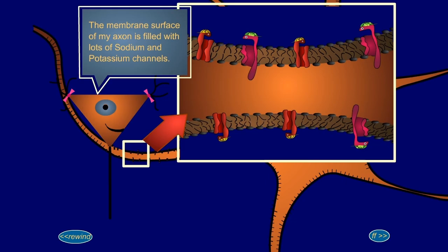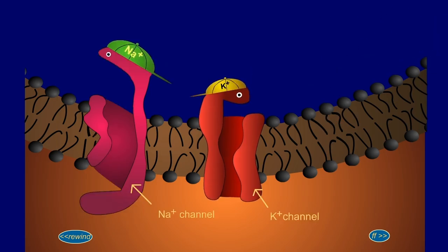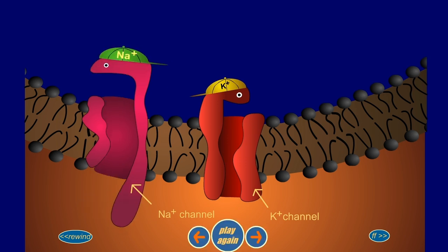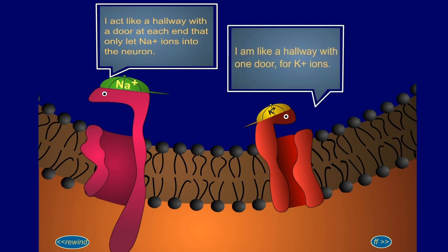The membrane surface of my axon is filled with lots of sodium and potassium channels. I act like a hallway with a door at each end that only lets sodium ions into the neuron. I am like a hallway with one door for potassium ions.